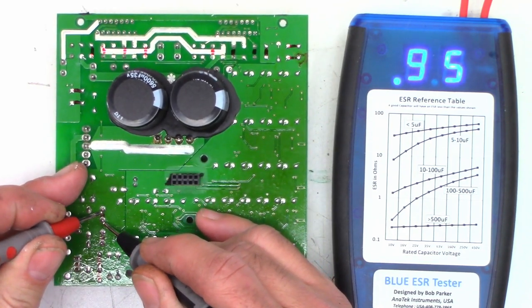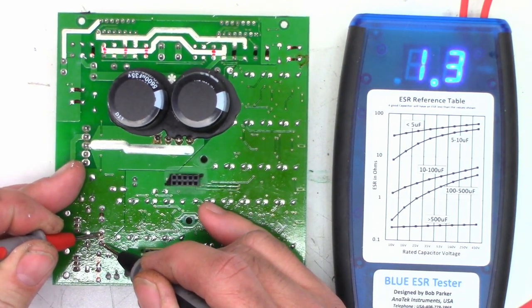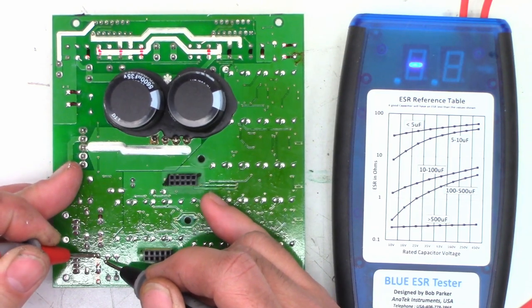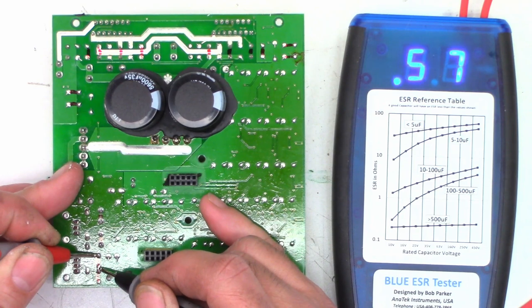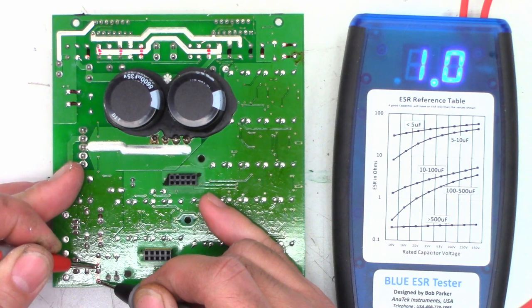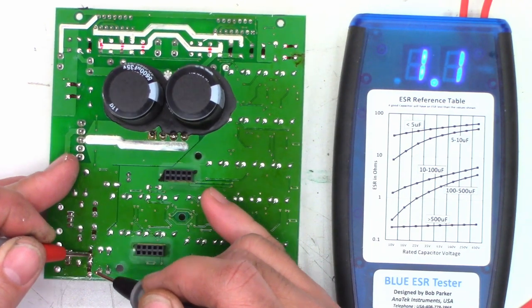And 1.3 on that one, a little bit high once again. Now the hundreds I'd like to see about a quarter ohm on these and I see 0.55 on that one, and one ohm on that one. So we're going to definitely want to replace all four of those caps.